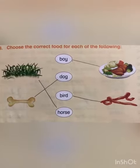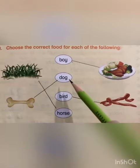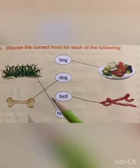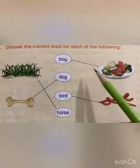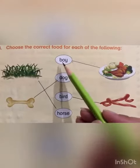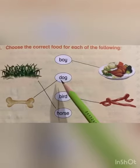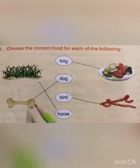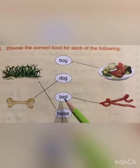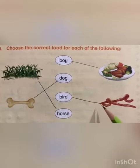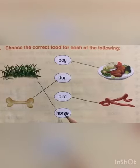In question number three, we have to match them according to the type of food they eat. Boy eats a plate of food, so we'll mark a line between boy and plate of food. Dog eats bone, so we'll mark a line between dog and bone. Bird eats worms, so we'll mark a line between bird and worms.